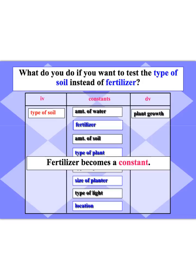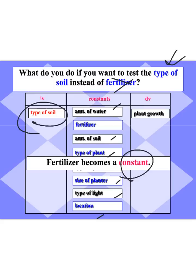What if we chose to change our experiment and do the type of soil instead of fertilizer? Well, now fertilizer becomes a constant. Our independent variable becomes the type of soil, and all those other constants also stay the same: water, amount of soil, type of plant, size of pot, how much light, location, surrounding temperature. The only thing we're changing is the type of soil. And our control would be whatever normal type of soil that plant would receive — maybe a farmer's typical soil. You always have to have that normal to compare it to.